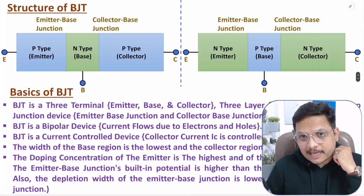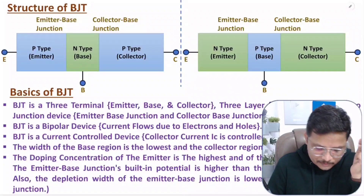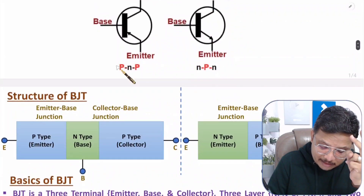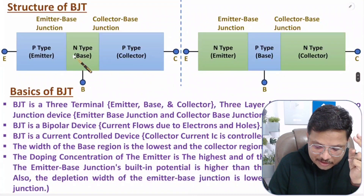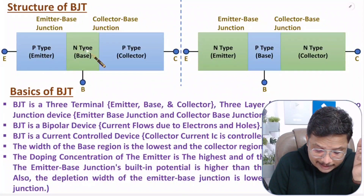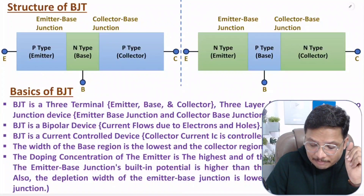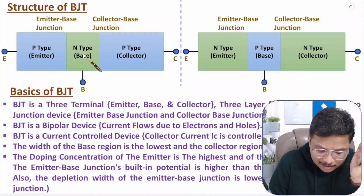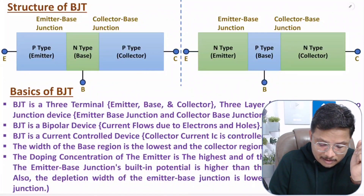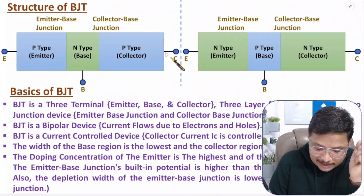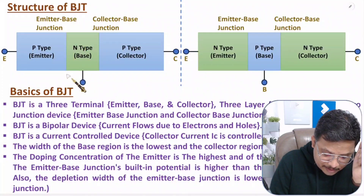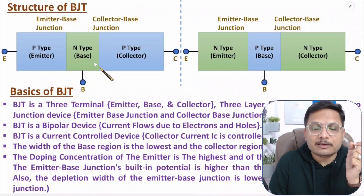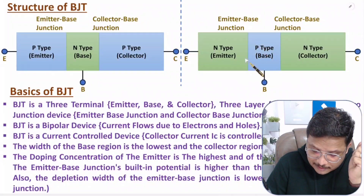BJT has three terminals: emitter, base, and collector, and two types: PNP and NPN. In the PNP structure, you have a P-type layer, N-type layer, and P-type layer. In NPN, you have N-type, P-type, and N-type. The middle layer is the base. In PNP, collector is on one side and emitter on the other, with two junctions: the emitter-base junction and the collector-base junction.